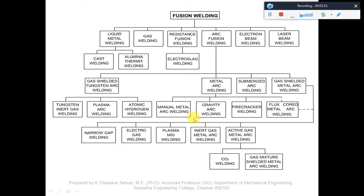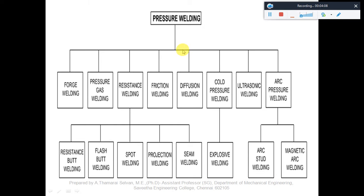We also have narrow gap welding, electro gas welding, plasma MIG welding, inert gas metal arc welding, and active gas metal arc welding, which is further classified into carbon dioxide welding and gas mixture welding. In pressure welding, we use forge welding, pressure gas welding, resistance welding, friction welding, diffusion welding, cold pressure welding, and ultrasonic welding.